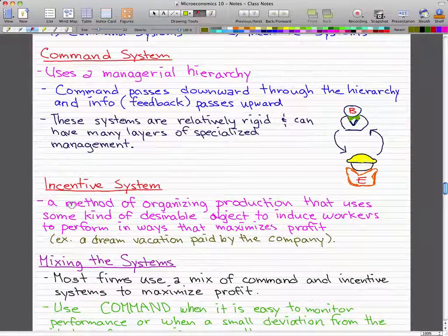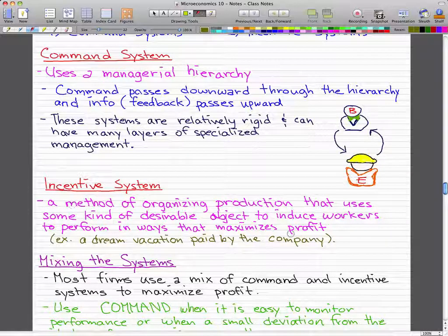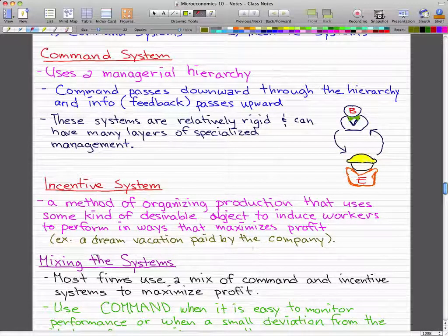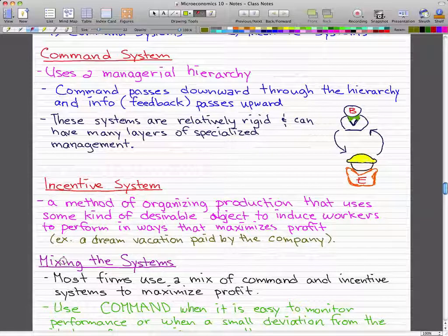Incentive systems is a method of organizing production that uses a market-like mechanism to induce workers to perform in ways that maximizes profit. So for example a dream vacation paid by the company, it sounds great doesn't it?